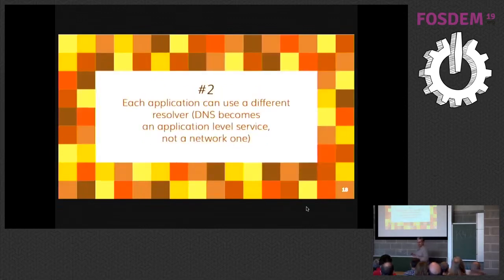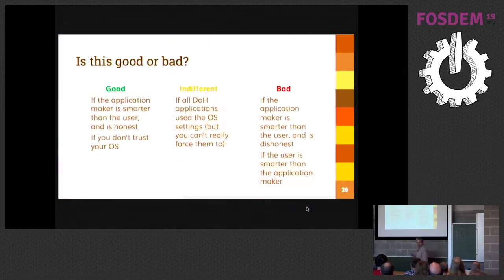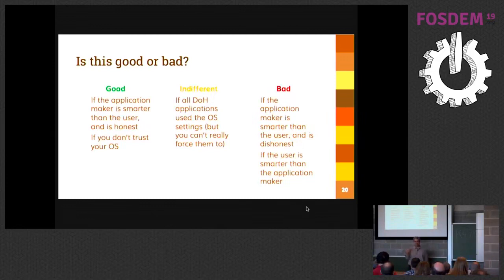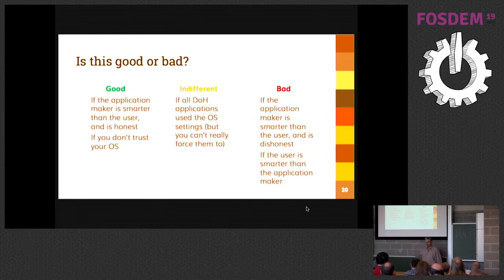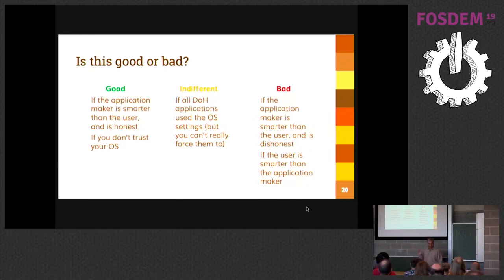The second change: each application using a different resolver. Is this good or bad? It depends. If you think the application is smarter than the user — this is the argument I've heard from Mozilla — the user would like privacy and security but isn't technical enough to change their DNS, so we change it for them. This is true if the user trusts the application provider and the provider is honest, acting on behalf of the user. It would be different if there were an agreement so that DoH applications use the user's settings — but this is not happening, at least now.